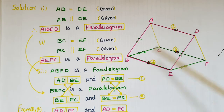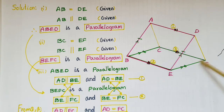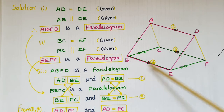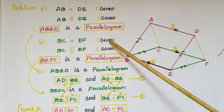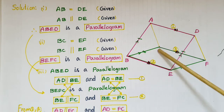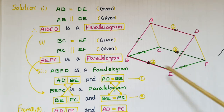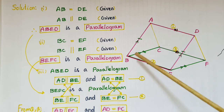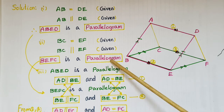Then we have to prove that BEFC is a parallelogram. Here BC is equal to EF — this is given in the problem — and BC is parallel to EF. So we can say that BEFC is a parallelogram.